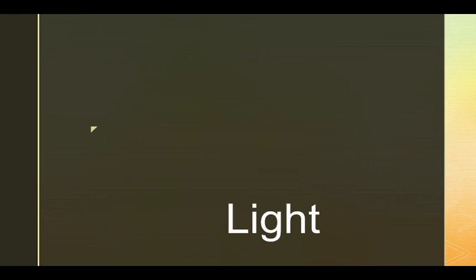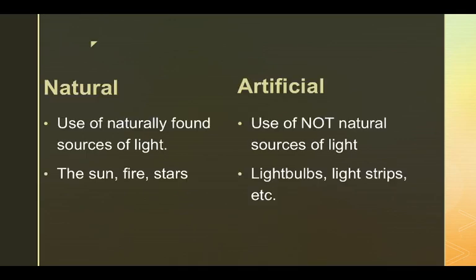We're going to talk about light and color today. Light first. There are two different types of light: natural light and artificial light.